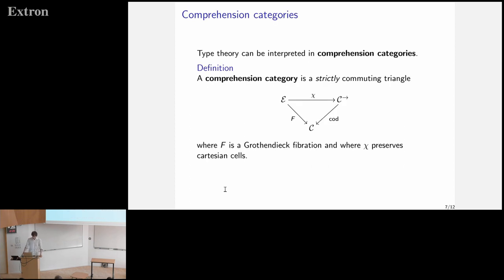So first, comprehension categories, which is needed because we are taking this notion and adding bi everywhere to get it better. So this is the notion of a comprehension category. We have this kind of triangle where this chi basically takes a comprehension. C is the context. E are the types over our context. And we have this function f, this functor f, which should be a fibration. The structure of a fibration is what allows us to do substitution. So we need this f to do substitution and this chi for context comprehension.